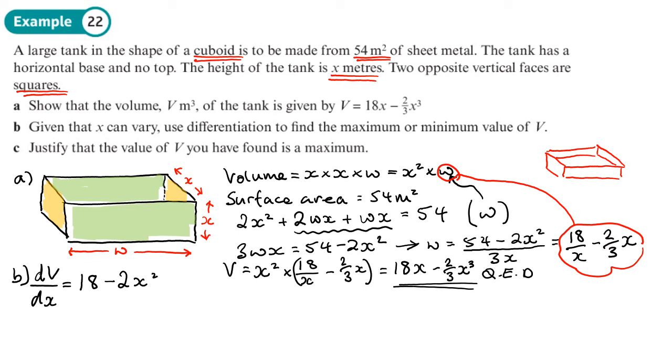The minimum or maximum volume will occur when dV/dx equals 0. When we've got that stationary point on our curve. In other words, when 18 minus 2x squared equals 0. So that will give us 2x squared equals 18, which is x squared equals 9. So x is plus or minus 3. But since we can't have a negative length, x will be 3.